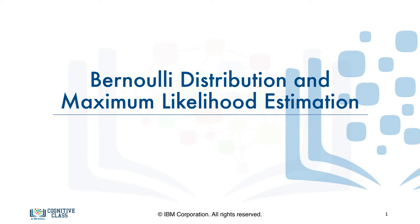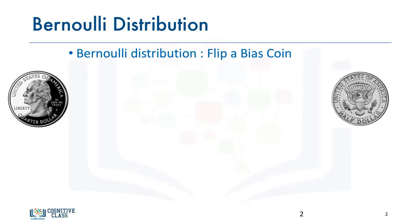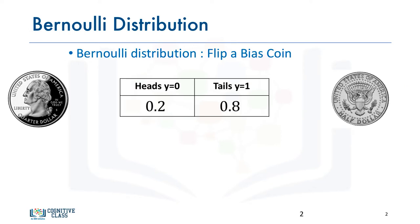In this video, we'll discuss the Bernoulli distribution and maximum likelihood estimation. Consider a biased coin flip. The probability of heads is given by 0.2, and the probability of tails is given by 0.8. It turns out we can represent both probabilities with one parameter, which we'll denote by theta.